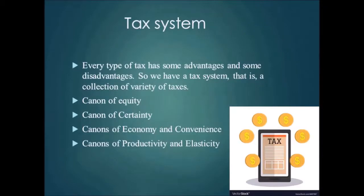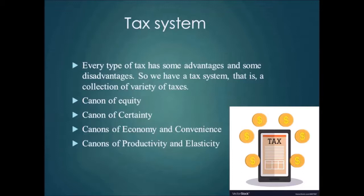The canon of certainty states that the tax which an individual has to pay should be certain and not arbitrary. According to Adam Smith, the time of payment, the manner of payment, and the quantity to be paid should be clear and plain to the contributor and to everyone. The government should announce the tax system in advance so that every taxpayer knows how much tax they may have to pay during the year.